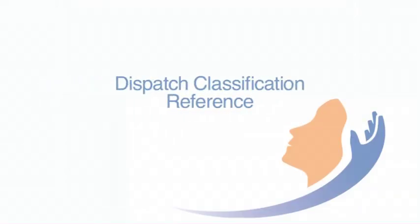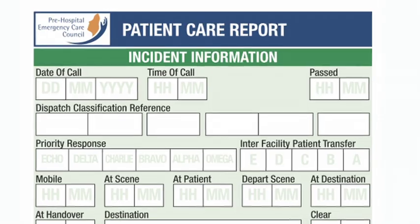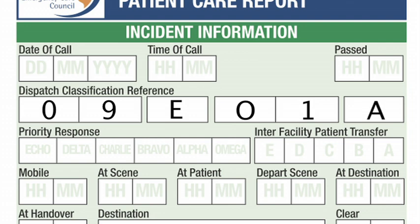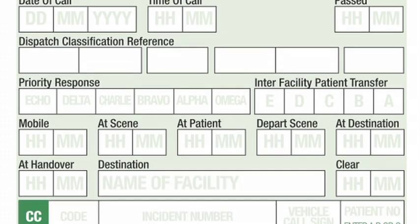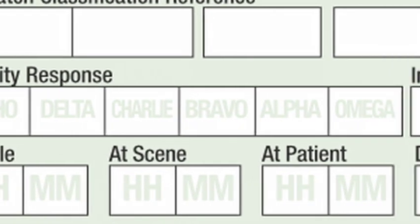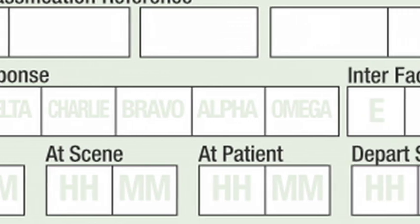Dispatch classification reference. A dispatched classification reference will be provided by the communication centre when a call is processed using the medical dispatch priority system. For example, 9-echo-1 suffix A will be entered as follows. Priority response is a response given to you by the communication centre, in line with the FEC priority dispatch standard. Tick box as appropriate.